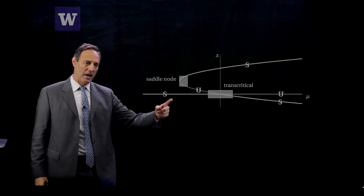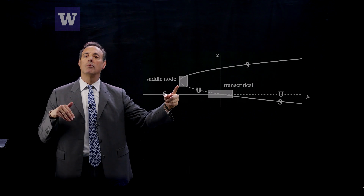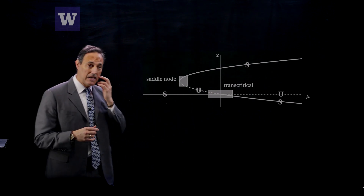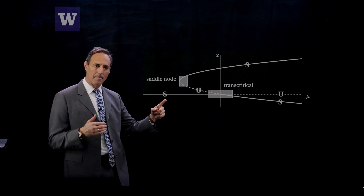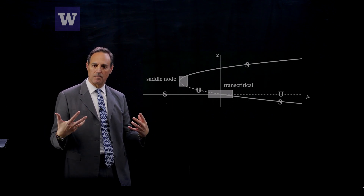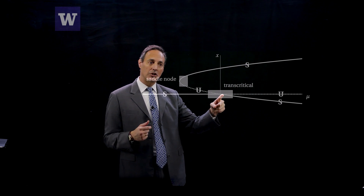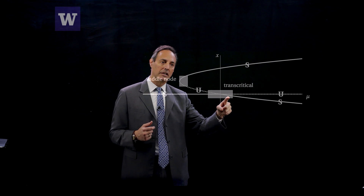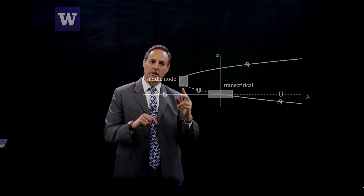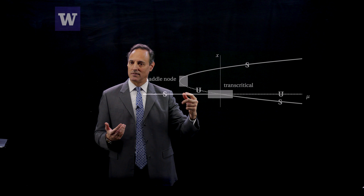Going back to the picture: the analysis near the fold point collapses into the normal form of a saddle node, and the analysis at the origin collapses into the form of a transcritical. I made a graphic where 'S' on the branch means stable, 'U' means unstable, shown as a dotted line. You can see the complete structure of the bifurcation diagram. There's a stable branch of solution at x = 0. At μ = 0, this branch goes unstable and transfers stability to another branch. Right there it's a transcritical — a transfer of stability. This unstable branch folds over and the stability switches.